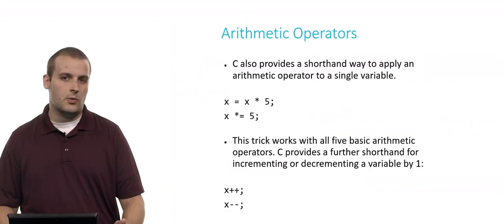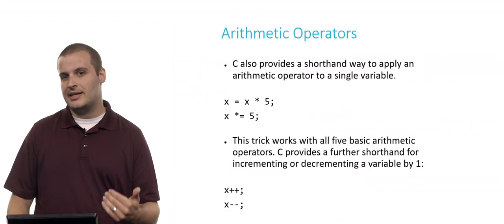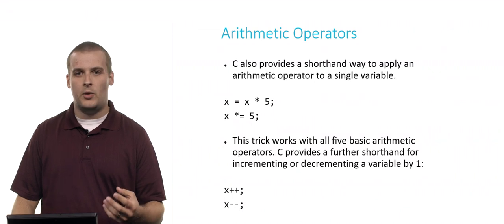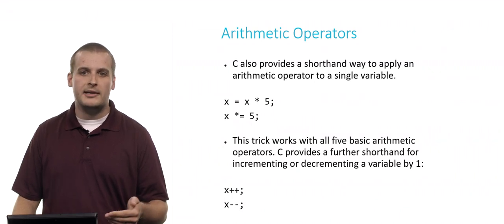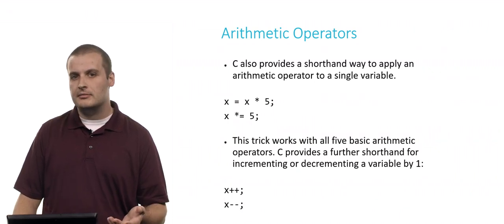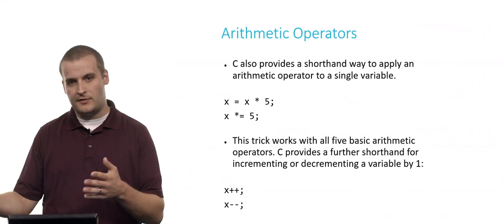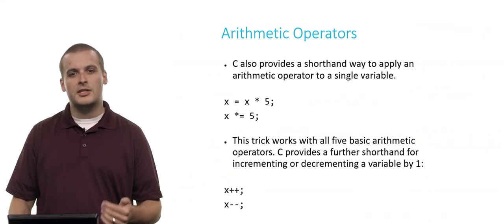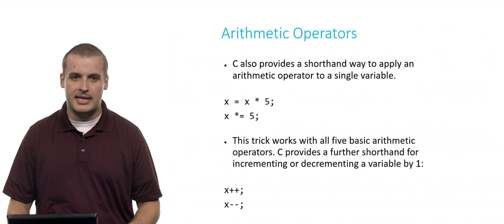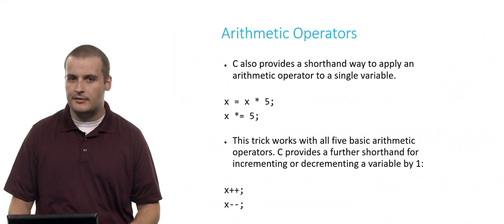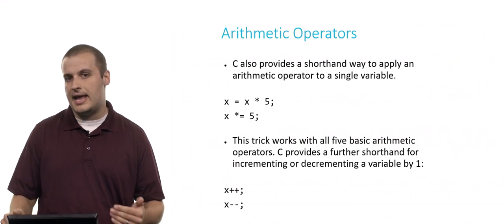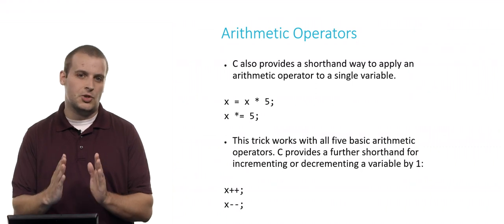So C also gives us a way to apply an arithmetic operator to a single variable in a little more shorthand way. So on the previous slide, we saw x equals x times 5. That worked. x times 5 then gets stored back in x. There's a shorter way to do it, though, and there's the syntax x times equals 5. It's the same exact thing as saying x equals x times 5. It's just a slightly shorter way to do it.